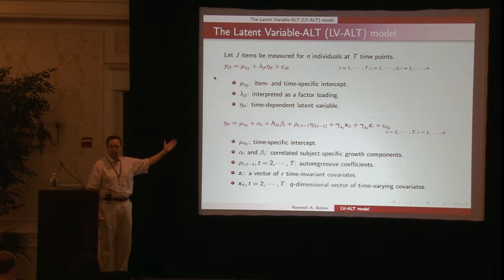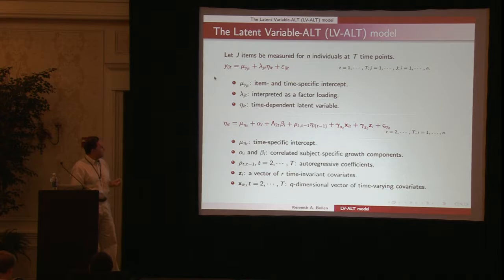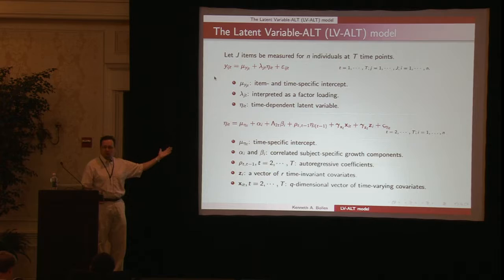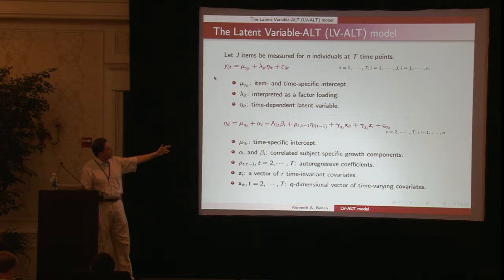In the next equation, we're determining what influences the latent variable. Mu sub eta T is the time-specific intercept. Alpha_i is a random intercept allowing different starting points. Lambda_2t times beta_i gives the rate of change in a growth curve situation, allowing that growth factor to have different impact depending on time period. Most often in growth curve models, lambda_2t is automatically assumed to be one.